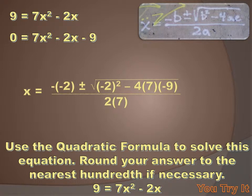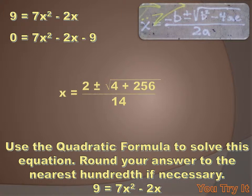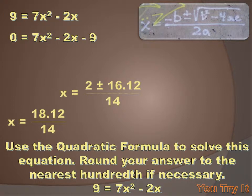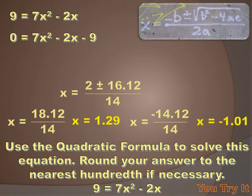Negative negative 2 becomes positive 2. Negative 9 times positive 7 times negative 4 — two negatives give a positive result. Squaring a negative also gives a positive. When I simplify, I get x equals 2 plus or minus 4 plus 256 all over 14, which simplifies to 2 plus or minus the square root of 260 over 14, or 2 plus or minus 16.12 over 14. That gives x equals 1.29 and x equals minus 1.01.